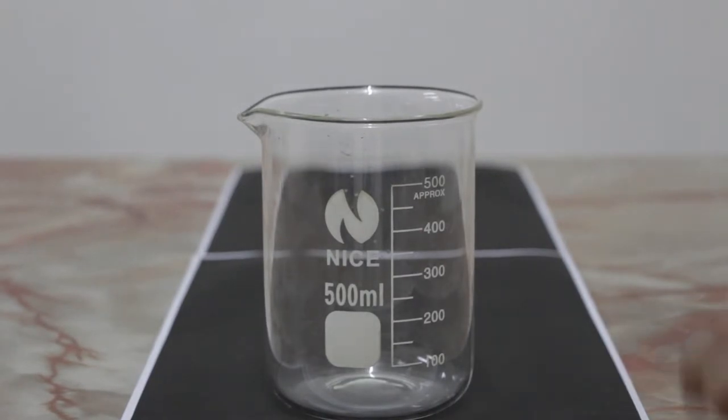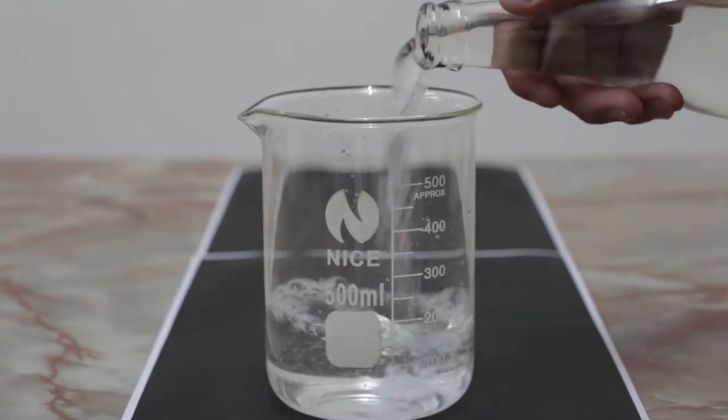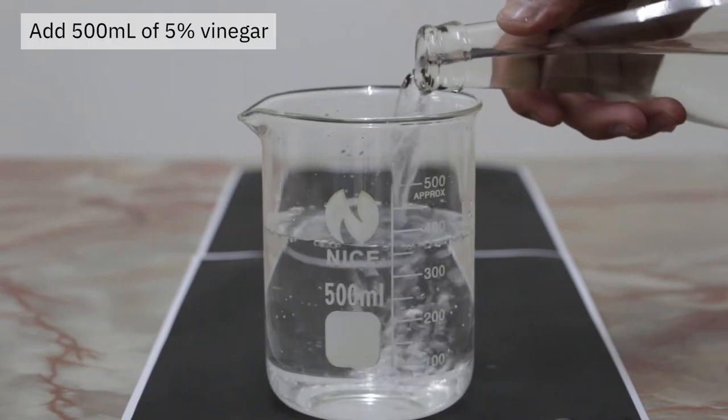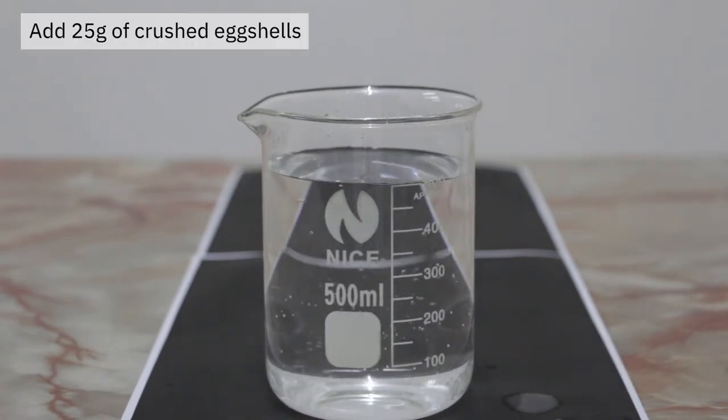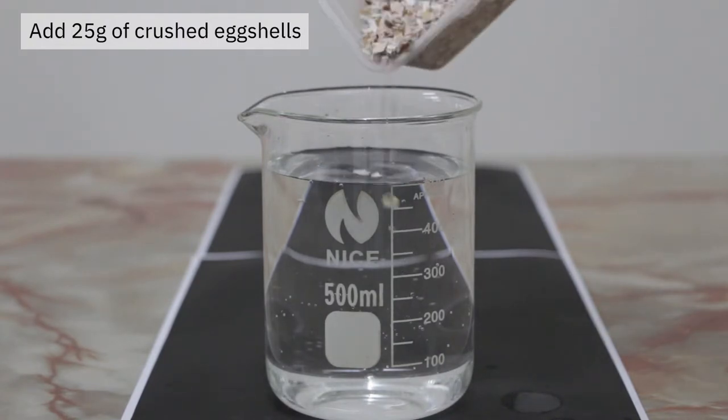The next part of the experiment involves synthesizing acetone. 500 ml of 5% vinegar is prepared. Then, 25 grams of crushed eggshells is slowly added to the solution.